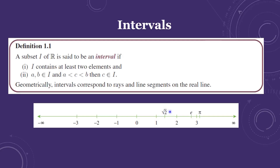Similarly, between 2 and 3 we have the value e, which is approximately 2.8 — so e lies between 2 and 3. And pi is approximately 3.14, so pi lies between 3 and infinity.